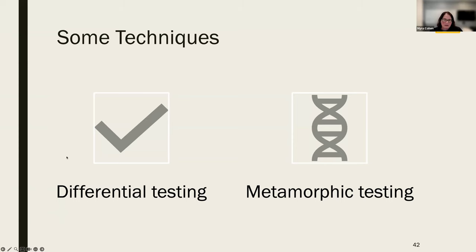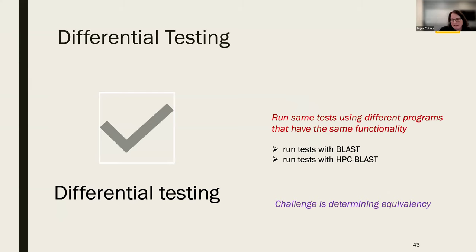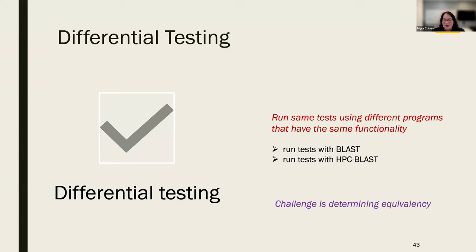Two of the most common techniques when we don't have oracles are differential testing and metamorphic testing. Differential testing takes the same test cases — same inputs, same models — and uses two or more different programs, checking that they have the same functionality. For example, I might run tests using BLAST and then run the same tests using HPC BLAST, checking if they're the same. Of course there's a challenge in determining equivalency — are those numbers the same? What scope is the application using — the same databases, the same representations? Differential testing in scientific environments is often very challenging to get working correctly.